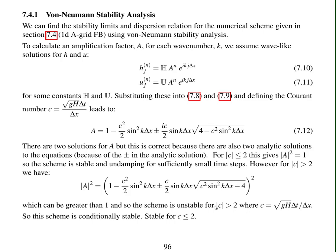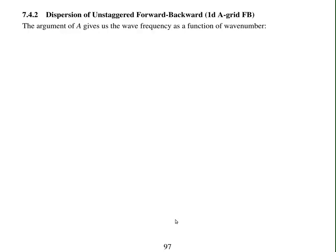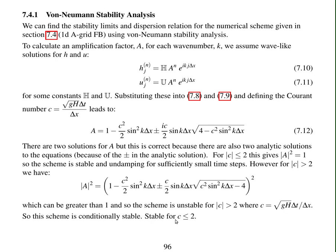So this numerical method, forward-backward with an A-grid, is conditionally stable. It's stable for a Courant number less than two. And in the next video, we're going to look at the dispersion properties, the dispersion relation of this scheme.